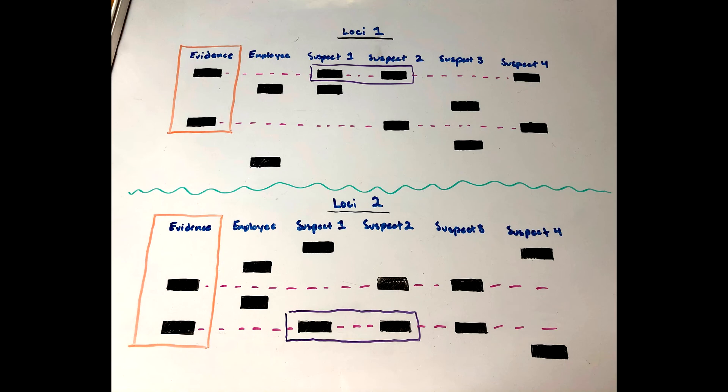One of the suspects was actually the parent of another suspect. Can you tell which one? The boxes represent alleles and since humans are diploid, a child receives one allele from each parent for each locus. You can tell that suspects 1 and 2 are parent and child because they share one allele at each locus.